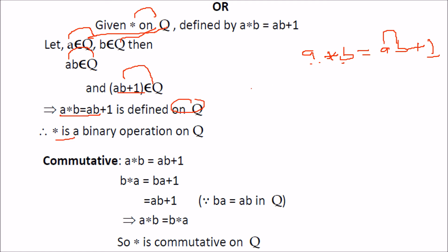For commutativity: a star b equals ab plus 1, and b star a equals ba plus 1. Since multiplication is commutative on Q, ab equals ba, so a star b equals b star a. Therefore star is commutative on Q.